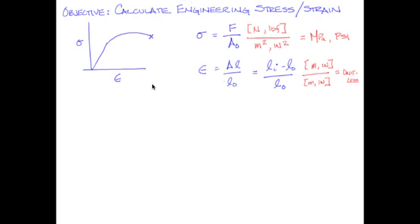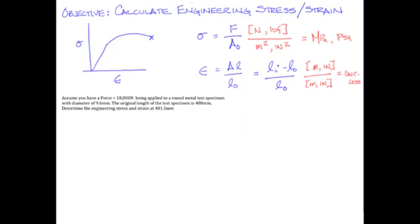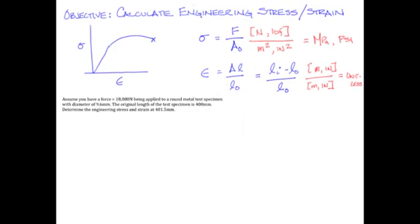To give an example calculating engineering stress and strain: Assume you have a force of 18,000 newtons being applied to a round metal test specimen, which has a diameter of 9.6 millimeters. The original length of the test specimen is 400 millimeters. We want to determine the engineering stress and strain at 401.5 millimeters.